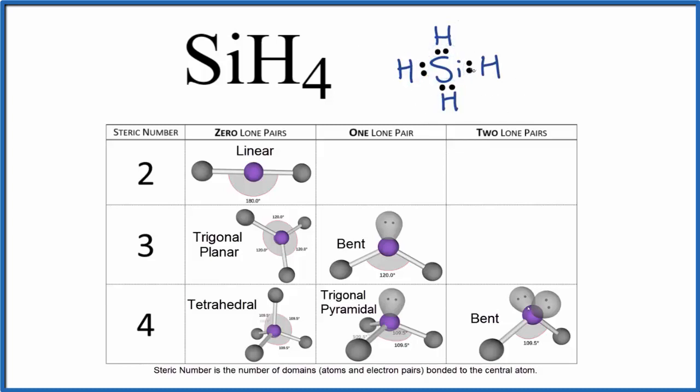So we look at the steric number, that's the number of things bonded to our central atom here. We have one, two, three, four hydrogens. So we'll have a steric number of four and we want to look how many lone pairs we have. All of these pairs of electrons are between atoms, they're involved in chemical bonds. So these are chemical bonds, they're bonded pairs of electrons. We don't have any lone pairs, we have zero lone pairs.